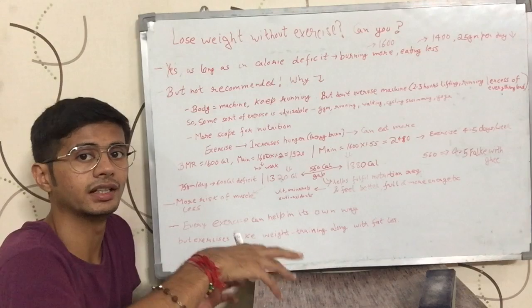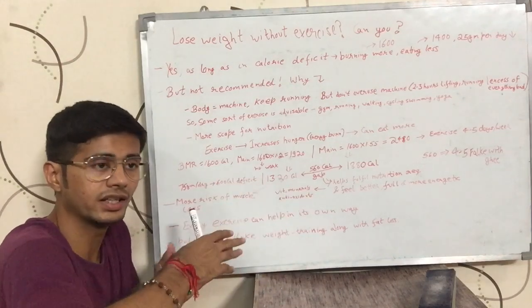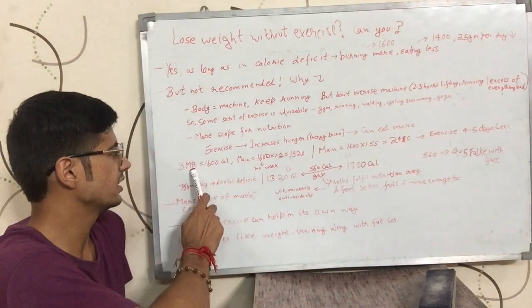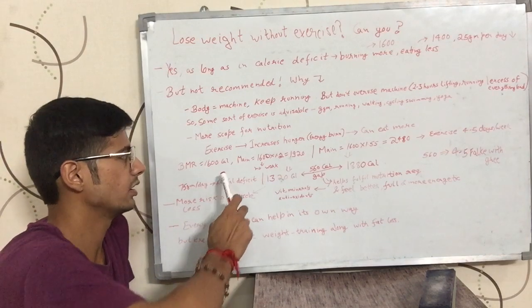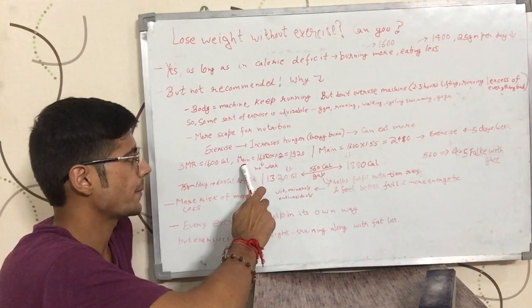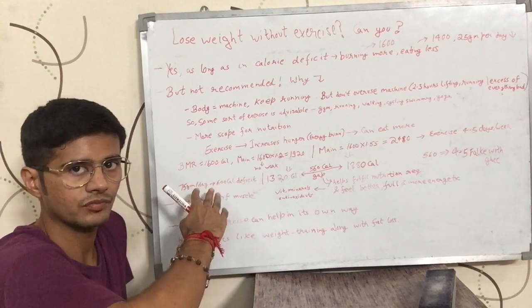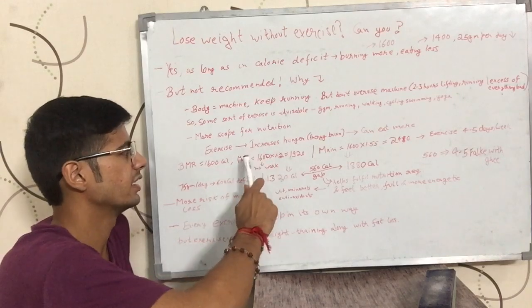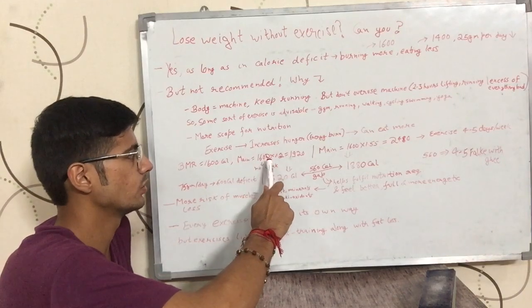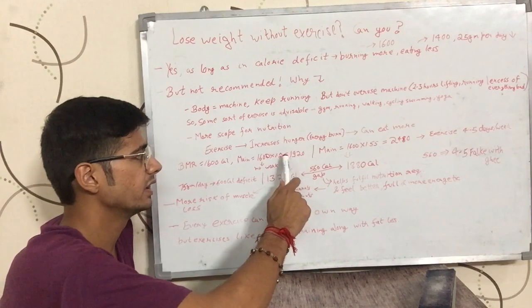It does not mean that you can eat too much, but you can eat somewhat more. So we will understand this with an example. So if your BMR is 1600 calories, you are a male, the females can take the example for their BMR.